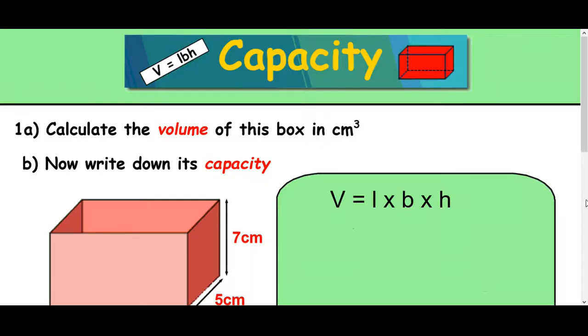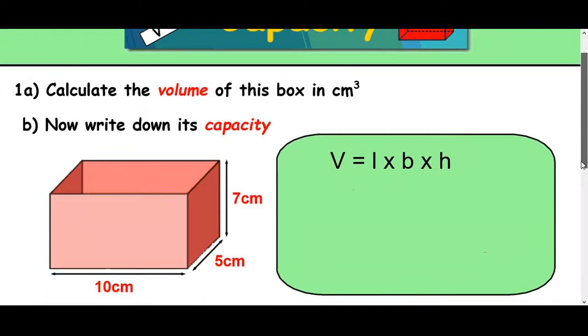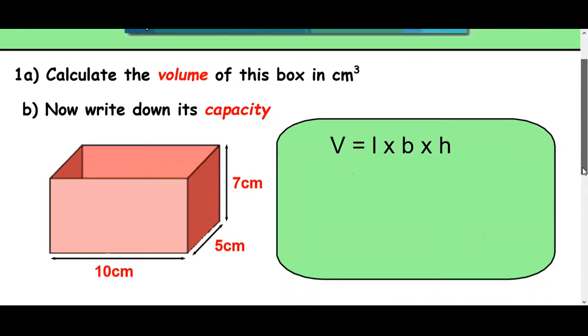Okay, let's just look at a few more examples. So same idea here. Calculate the volume of this box in centimeters cubed and then write down its capacity. So if it's asking for capacity, it's looking for a unit of liquid, which is milliliters or liters. If it doesn't specify, just choose the best one.